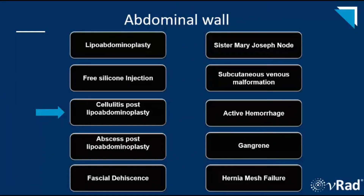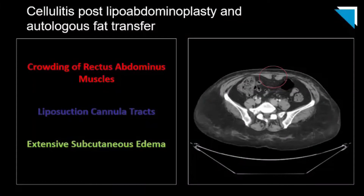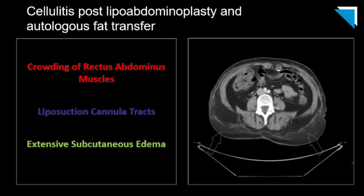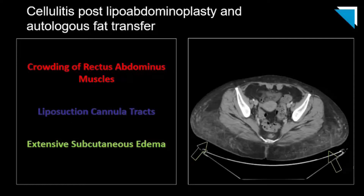Our next case is cellulitis following lipoabdominoplasty. This patient underwent lipoabdominoplasty and autologous fat transfer in addition to liposuction. We start again with our post-abdominoplasty findings — this midline crowding of the rectus muscles, outlined in a red circle. Then as we move caudally, we see the area of the fat grafting with extensive subcutaneous edema and skin thickening.